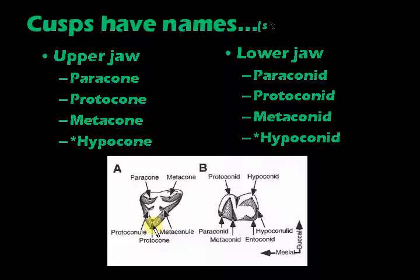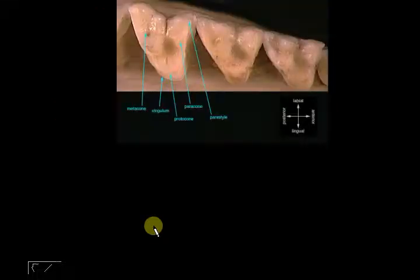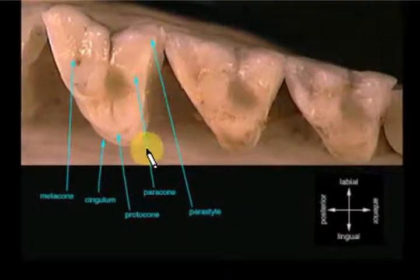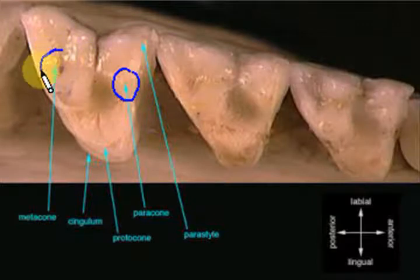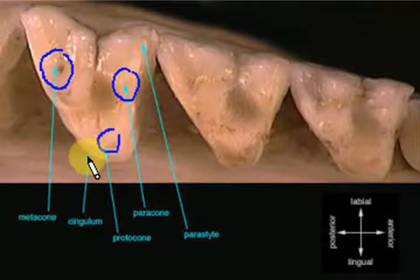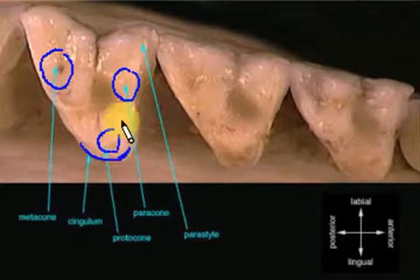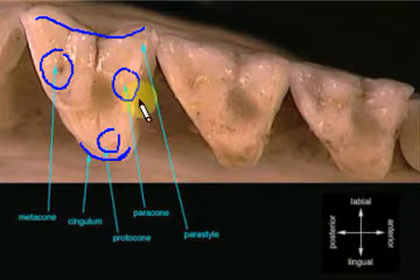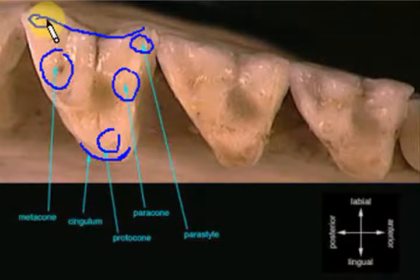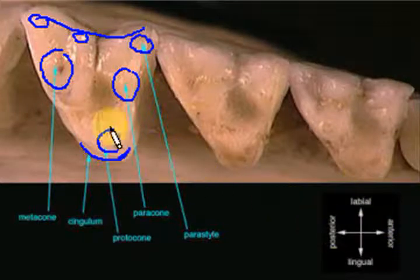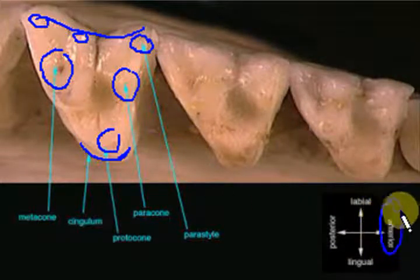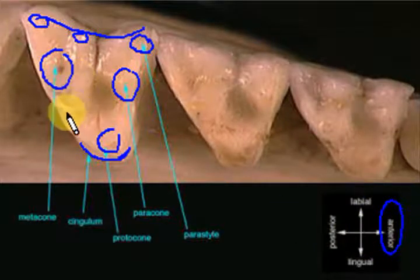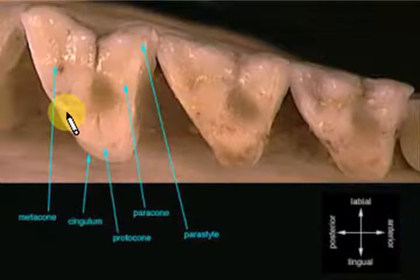Looking at the actual tooth anatomy: the paracone and metacone are here, the protocone is here, and the cingulum is the shelf I mentioned. This part is the styler shelf — you might think the cusp there is the paracone, but it's actually on the styler shelf and has a different name. Usually the protocone and paracone are found anteriorly, whereas the metacone and the fourth cusp, the hypocone, are usually found posteriorly.